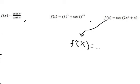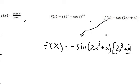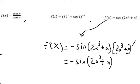Now let's go to the next one. The first derivative of cos — you get negative sin. Later we take the first derivative inside. This gives you 6x squared plus 1. And that is the final answer.